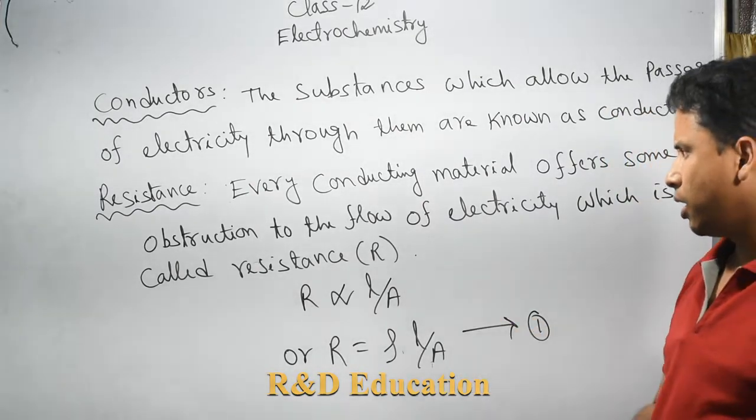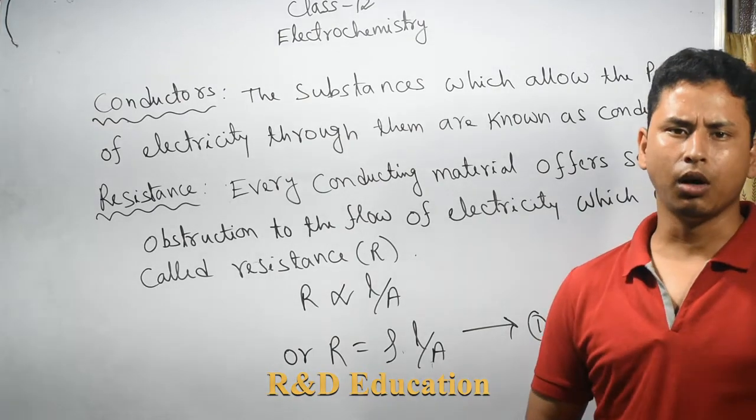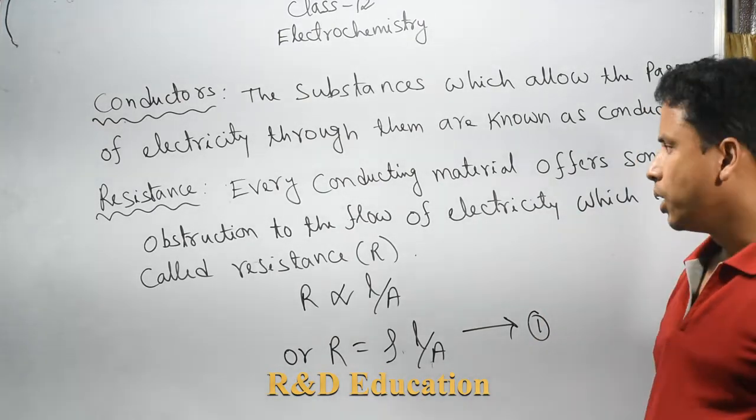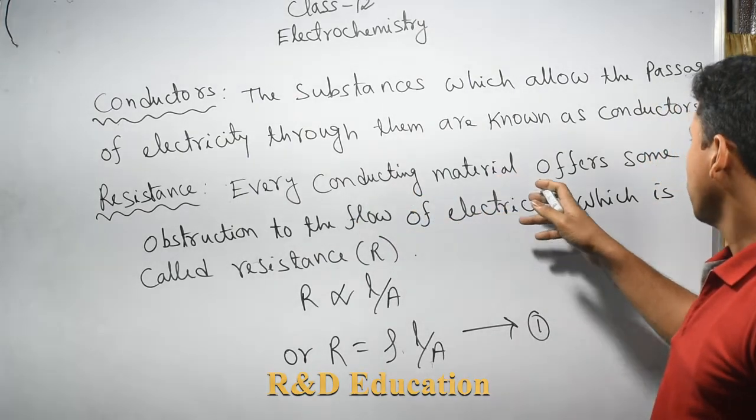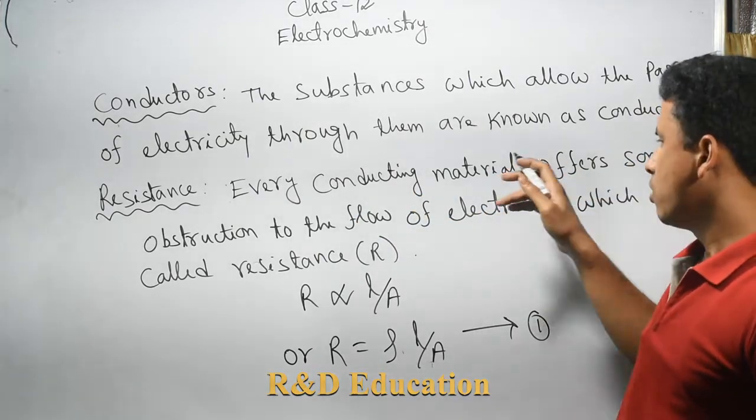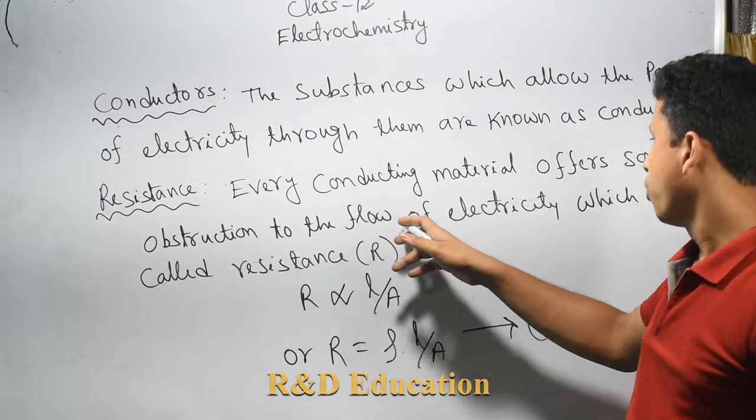Every conducting material offers some obstruction to the flow of electricity, which is called resistance.